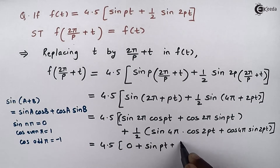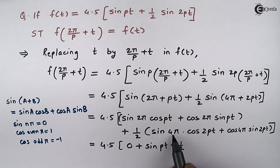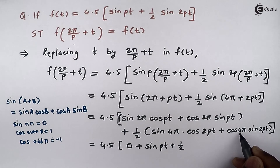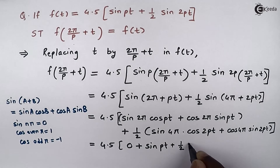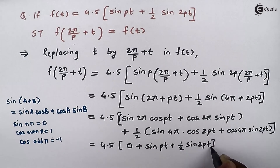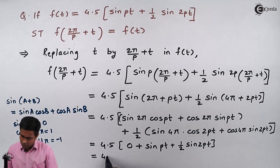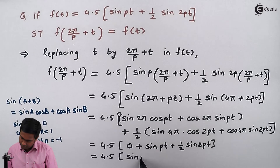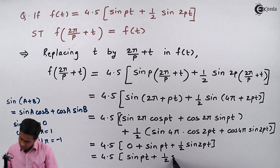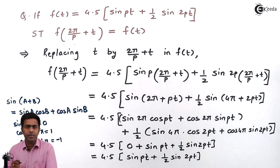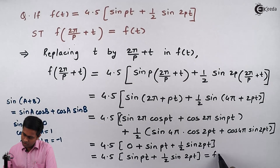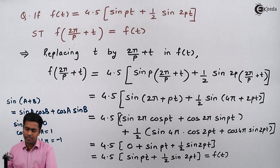Similarly, plus 1 by 2: sin(4π) = 0 by the same formula, so the first term is 0. cos(4π) = 1 since 4 is even, giving 1 times sin(2pt) which is sin(2pt). Rewriting this, it becomes 4.5 inside the bracket sin(pt) plus 1 by 2 sin(2pt), and if we observe this carefully, it is equal to f of t. So we have proved the result.